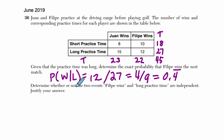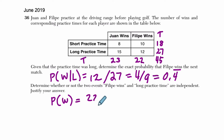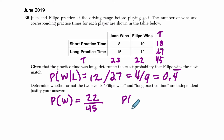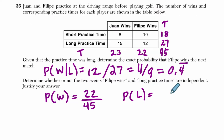So with that being said, let's go to the next part. Determine whether or not the two events — Felipe wins, so the probability that Felipe wins — and I want to find that Felipe wins 22 times out of 45, and long practice time are independent. The long practice time probability is 27 out of 45.